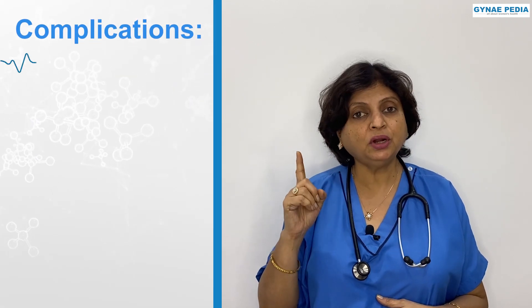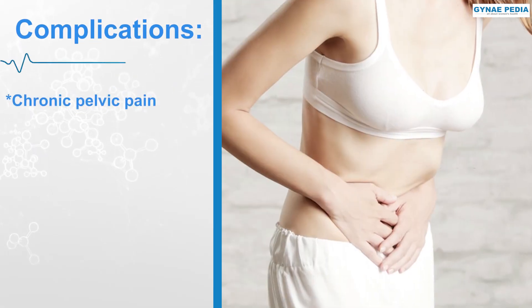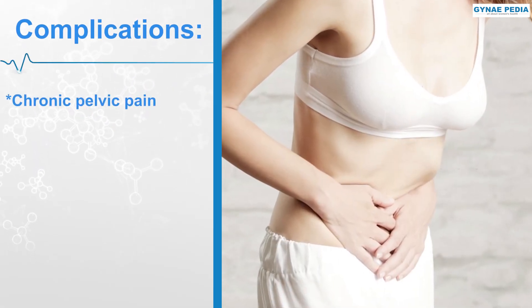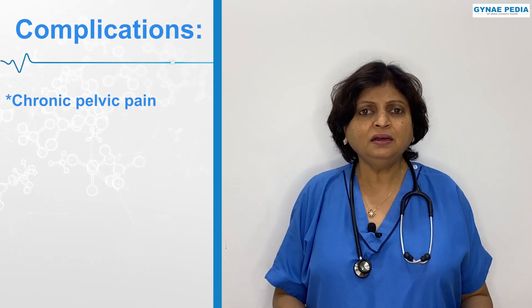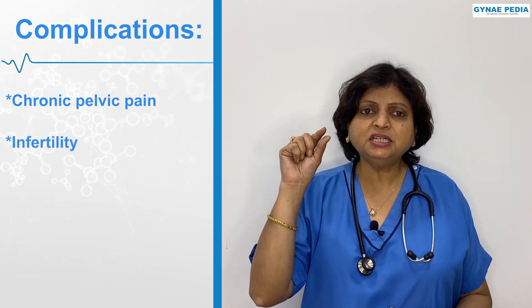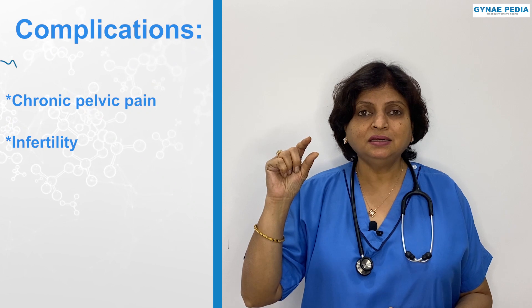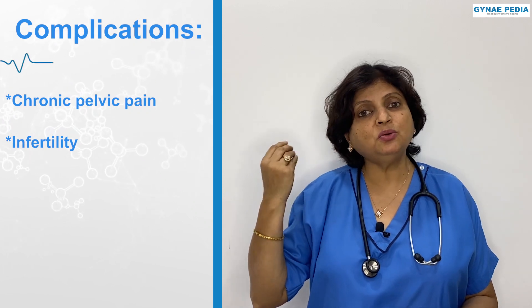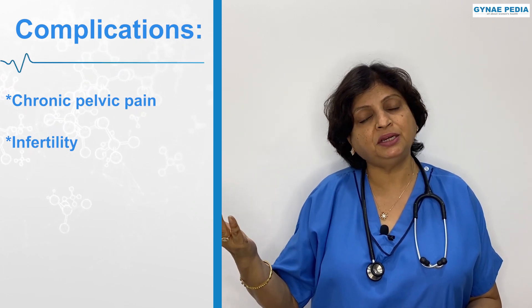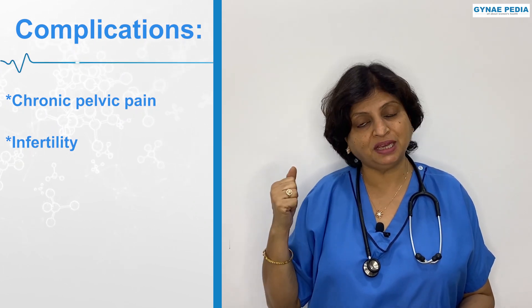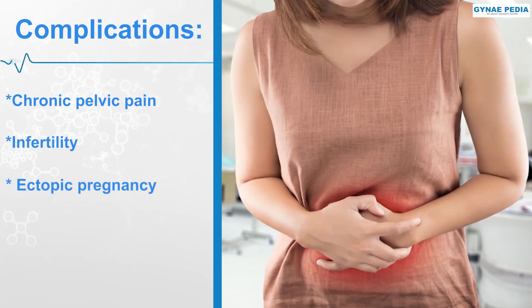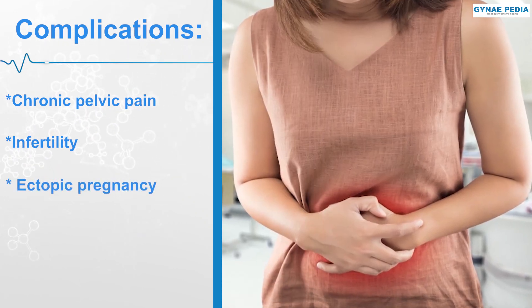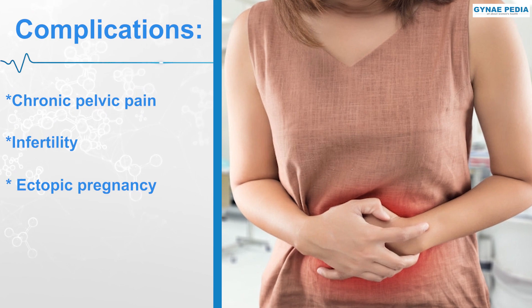What are the complications? First, Chronic Pelvic Pain — that is, you have pain and low backache every time. Second, if the tubes are damaged with scarring, someone can have a problem with having a child, which is called infertility. Third, there is a risk of ectopic pregnancy, which can sometimes become life-threatening.